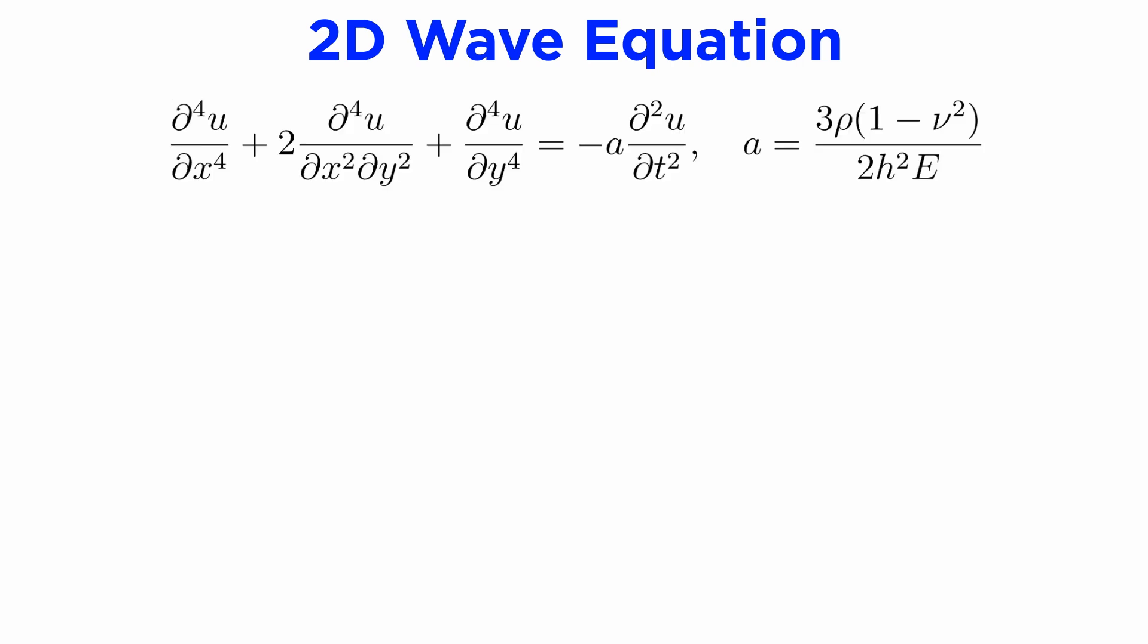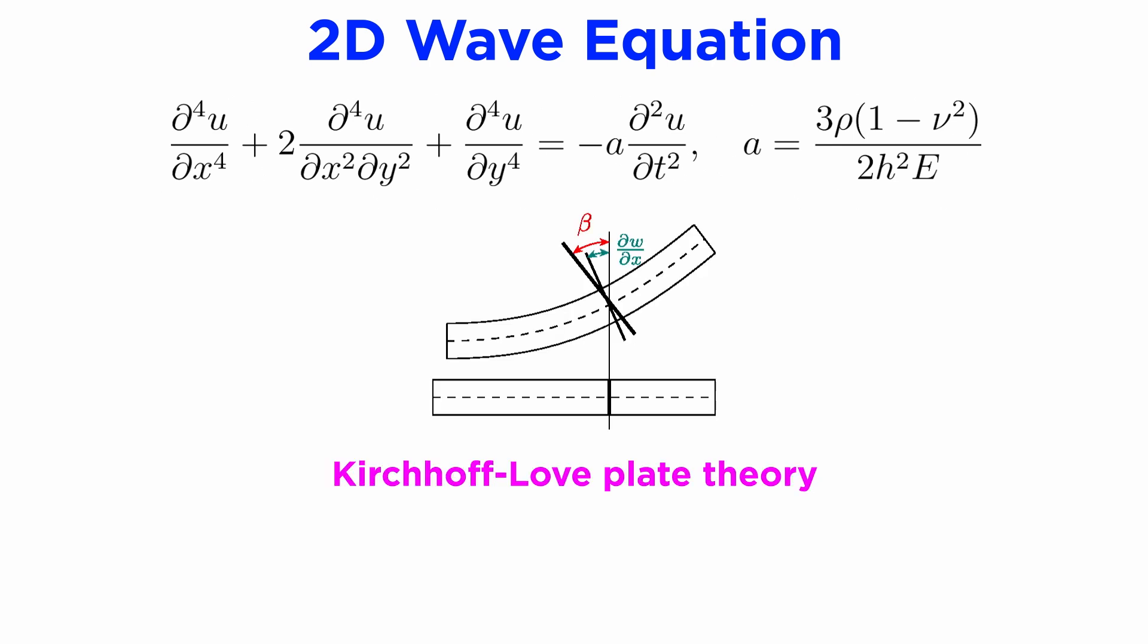Let's now take a quick look at a variation of the 2D wave equation. This equation doesn't have a particular name, but it does have some very interesting properties. If we take our two-dimensional membrane and give it some mass and elasticity, such as a solid thin plate made of a strong material, the vibrations in this plate will be modeled by this equation, which comes from something called Kirchhoff-Love plate theory.